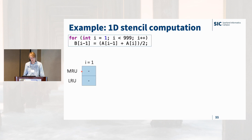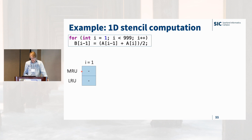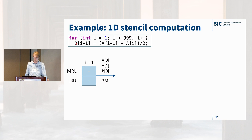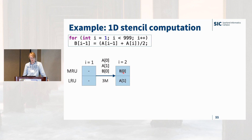Let's look at a very simple 1D stencil computation with a fully associative LRU cache — this is for the example, but the approach generalizes to more complex realistic systems. Each matrix entry fills exactly one cache line. We have a cache of size 2, with the MRU element and LRU element. In the first loop iteration, accesses to A[0], A[1], and B[0] all cause cache misses — three misses total. The resulting cache state has B[0] as most recently used, then A[1].